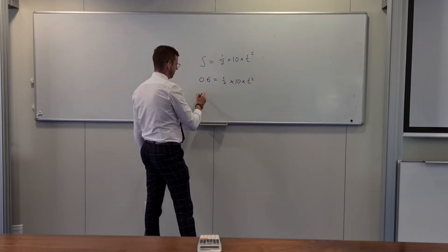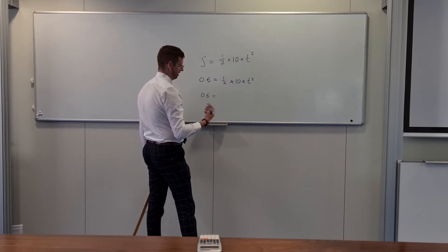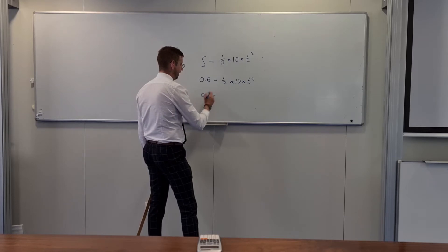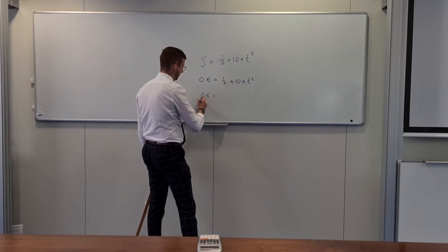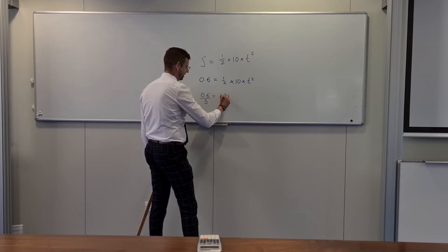If this was 0.6 meters and this was equal to a half times 10 times t squared, then what I would need to do is divide both sides by a half times 10, which is 5. So divide both sides by 5 and that would get rid of those things on that side. So 0.6 divided by 5 is equal to t squared.